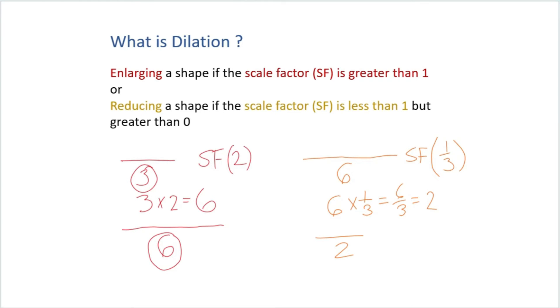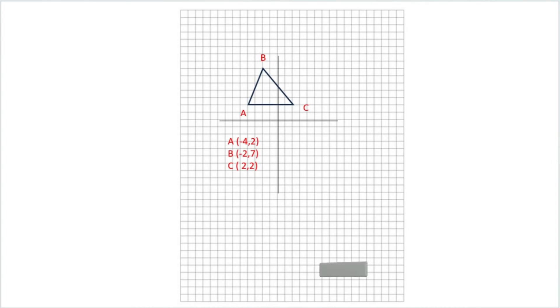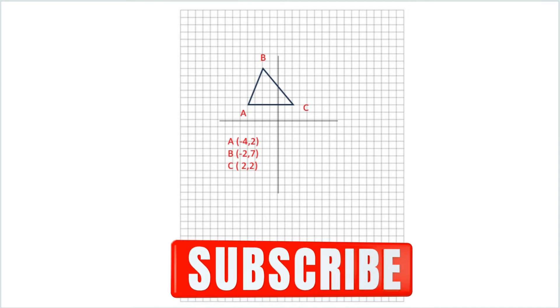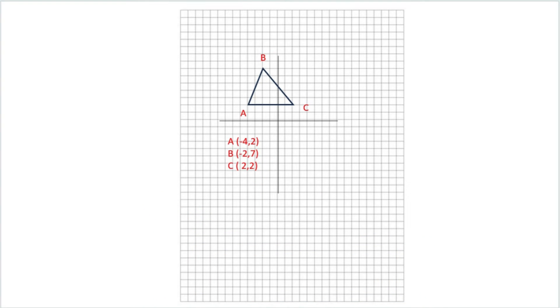So let's take a look at an example. So here I have a triangle ABC and the position of A is negative four, two, B is negative two, seven, and C is two, two. So all I'm going to do is multiply my x and y coordinates for each point by a scale factor.